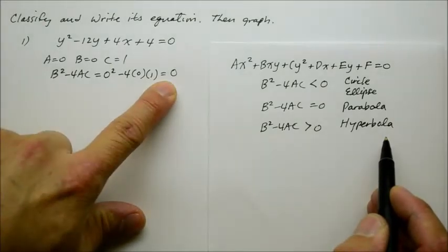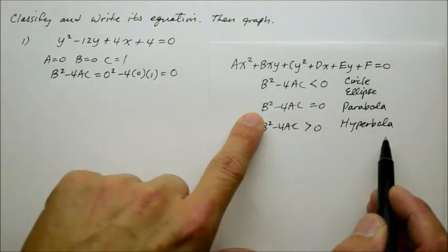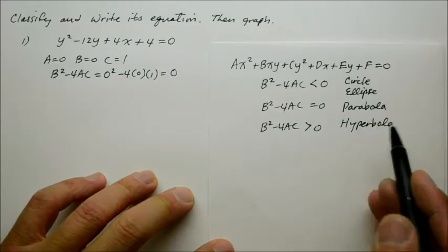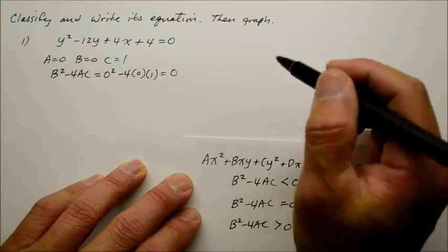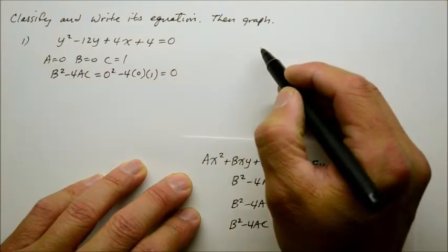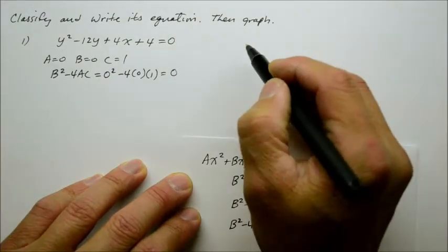So in this case, since we have a discriminant of 0, we're looking for a parabola. A parabola, given a conic section where its midpoint is not the center, is given as...